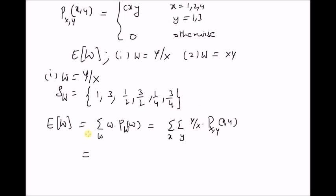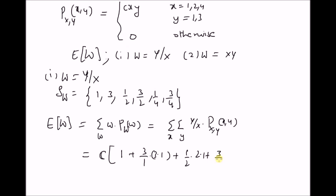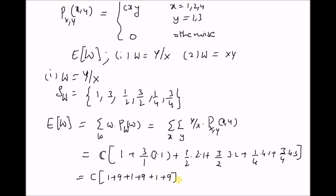Using this definition, we calculate E[y/x] = C times: for x=1, y=1: (1/1)·1·1; for x=1, y=3: (3/1)·3·1; for x=2, y=1: (1/2)·2·1; for x=2, y=3: (3/2)·3·2; for x=4, y=1: (1/4)·4·1; and for x=4, y=3: (3/4)·4·3. This equals C times (1 + 9 + 1 + 9 + 1 + 9) = 30C. Therefore, the expected value of the ratio y/x is equal to 30C.